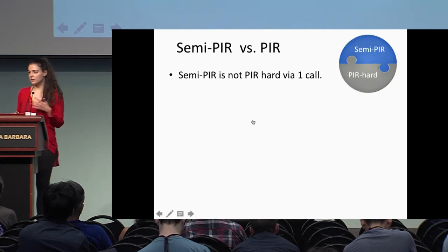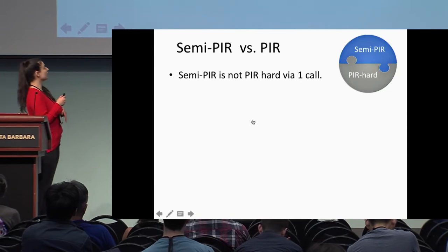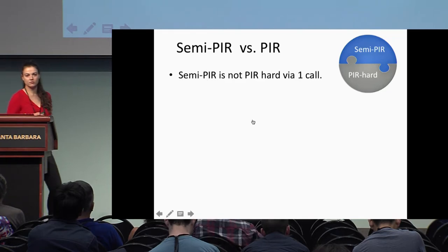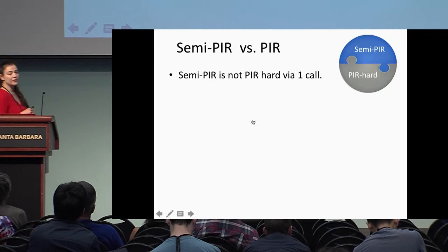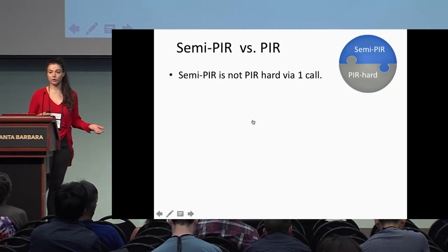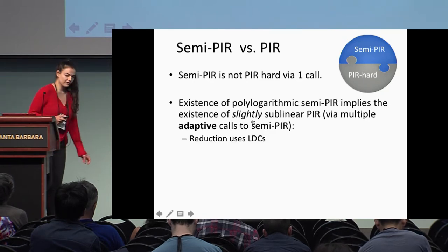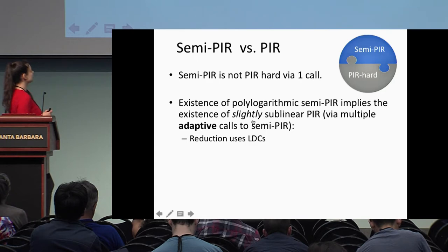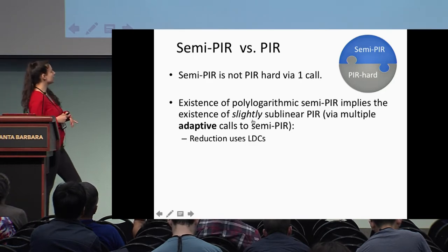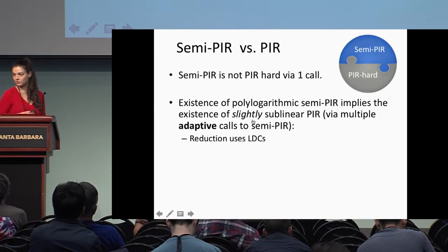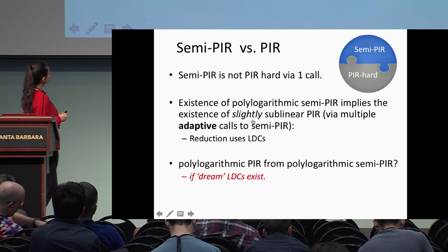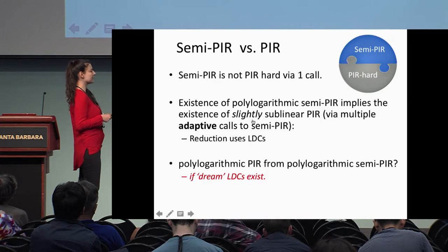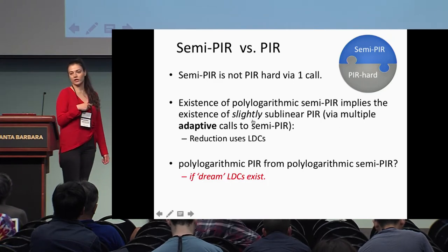We also show information-theoretic separations between semi-PIR and PIR: we prove you cannot construct PIR from a single call to semi-PIR, and in the paper we handle multiple calls too. This really means semi-PIR captures the true complexity of these natural problems. We then give evidence that semi-PIR is as hard as PIR: the existence of polylogarithmic semi-PIR implies the existence of slightly sublinear PIR via an adaptive reduction making multiple calls to semi-PIR.